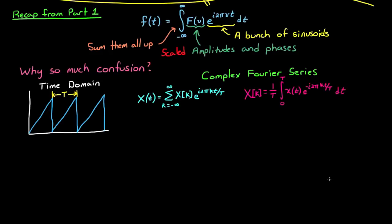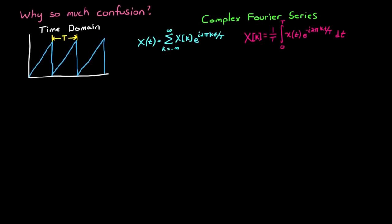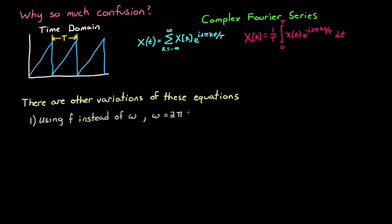However, here's where it gets tricky, and frankly pretty annoying. If you look up the equations for complex Fourier series, you might not see it written exactly like this. That is because there are multiple variations of these equations. This includes using frequency instead of angular velocity, with the relationship omega equals 2 pi f. Now in the way that I wrote it, k is a multiple of the fundamental frequency. Also, the equations might integrate over different periods.